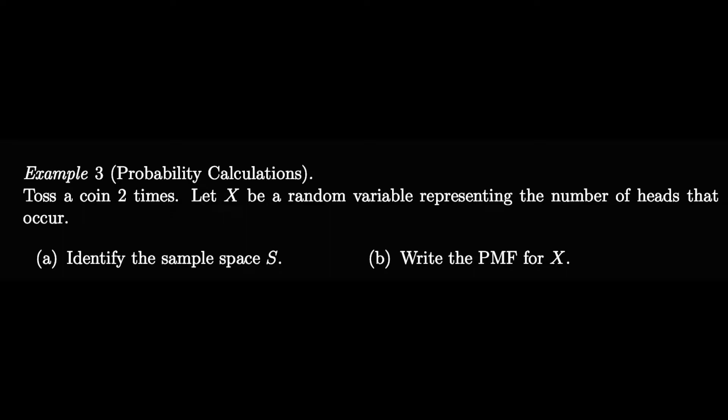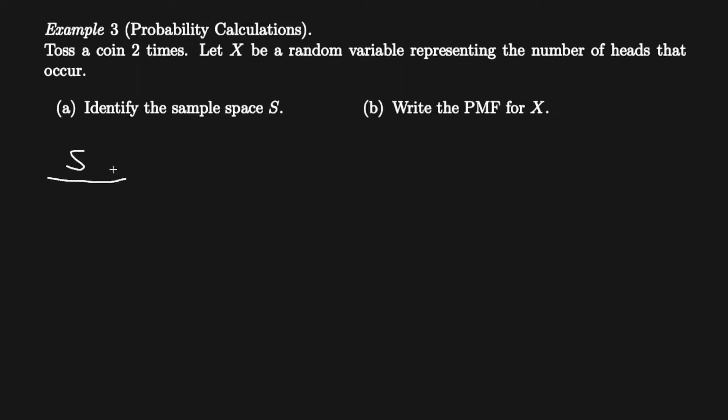So for part a, it says identify the sample space S and write the PMF for X. Now here we have the sample space S with X, and we can see that there are four different outcomes: heads heads, heads tail, tail heads, and tails tails.